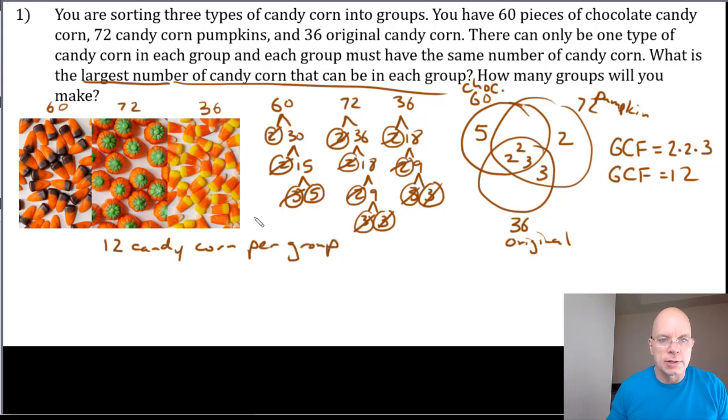That is the answer to the first question. And then how many groups will you make? This question is a bit tougher, but we can still use the Venn diagram to answer this question because the 12 is right here. And so if I want to know how many groups of chocolate candy corn I can make where there are 12 pieces of candy in each group, it's just 12 times 5. 5 times 12 is 60, so I have five groups of chocolate candy corn.